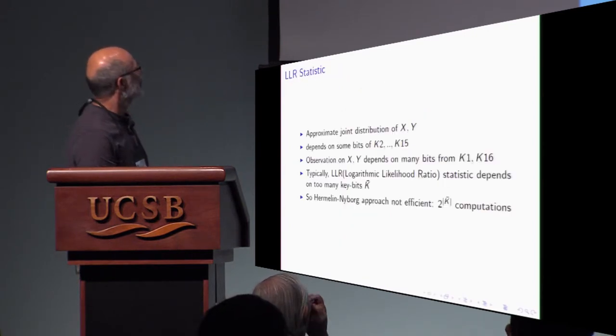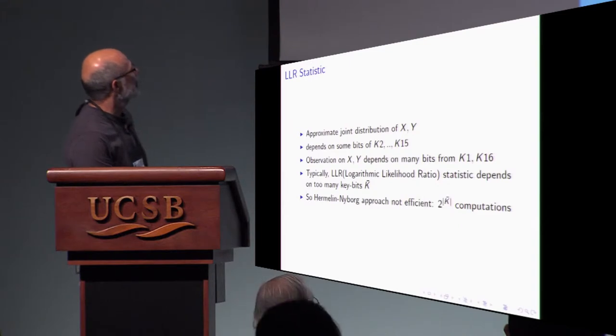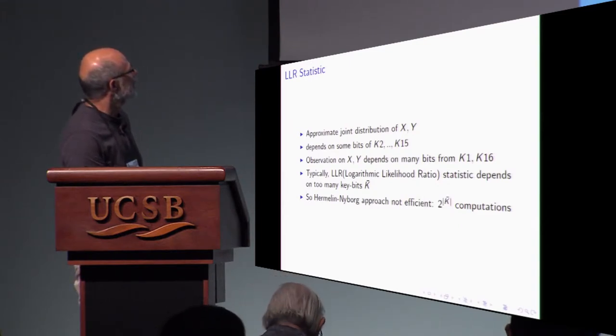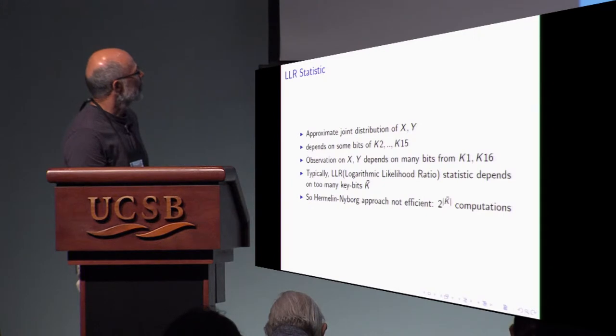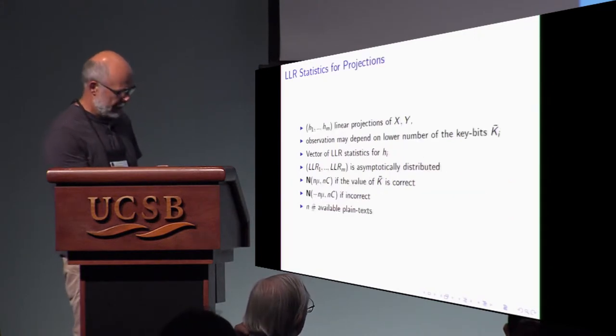This cryptanalysis uses logarithmic likelihood ratio statistic. In this case, observation depends on so many key bits. And distribution itself depends on some key bits. So that statistic itself depends on so many key bits. And to use this statistic, you need the 2 power size of the key bits computation. This is too expensive.